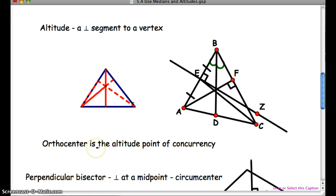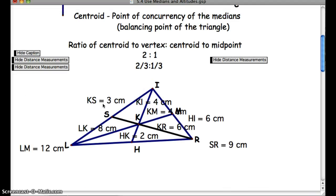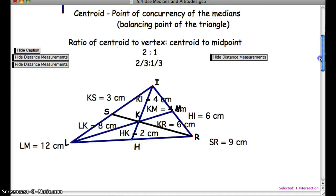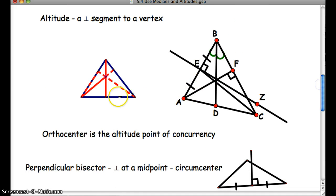Your orthocenter is the altitude point of concurrency. That's where all of your altitudes meet. So this point right there would be your orthocenter. It's like your circumcenter. It's like your incenter. It's like what we just talked about up here, your centroid. And now your orthocenter is the one that goes with your altitudes. It's where all the altitude segments meet to one point.